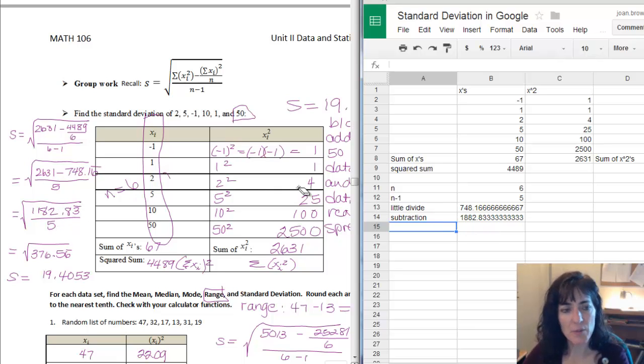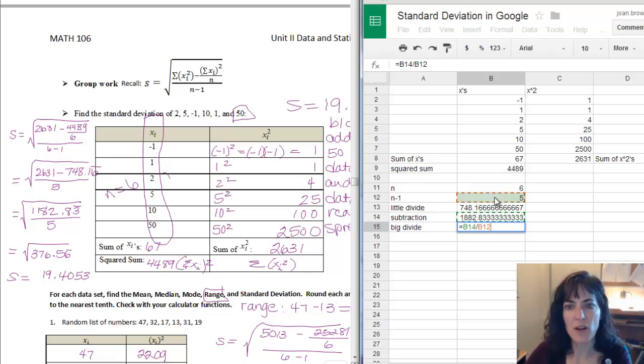Now I need to finally divide by that five. So this will be the big divide. And so the big divide is going to be that number I just came up with. See, nothing happened in the cell that tells me I forgot the equals. So put the equals in, click on that subtraction result, and then slash for divide, and then click on the n minus one, and then push enter. And so I have 376.56 repeating. So my big divide, 376.56 repeating.